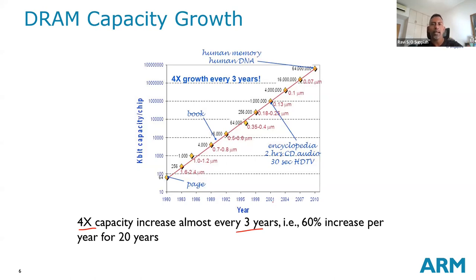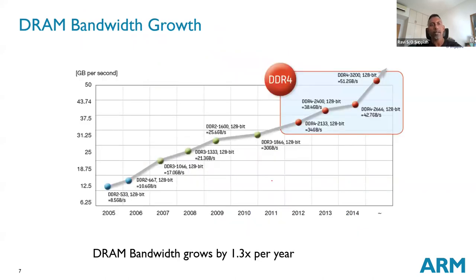When we talk about capacity, we mean the amount of memory you can squeeze into the same footprint — the same physical space occupied. That allows us to pack more stuff into a smaller space, making products more compact. The other issue is that capacity is one thing, but how fast you can access your data is also important. That determines how effectively you can run your system.